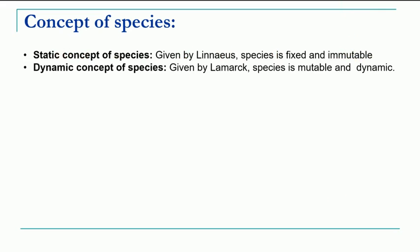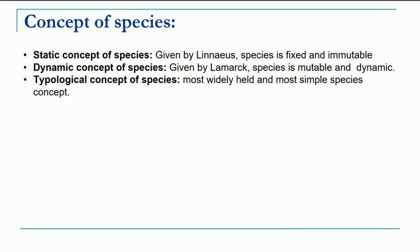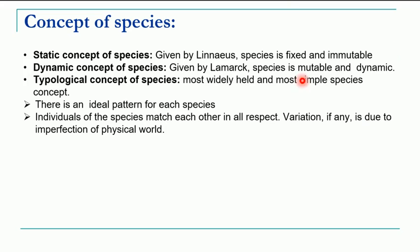The next concept was proposed by Lamarck, known as the dynamic concept of species. According to this concept, species is mutable and dynamic — it continuously undergoes changes. Then the third concept, the typological concept of species, was proposed. This is the most accepted and simplest concept. According to it, there is an ideal pattern for each species; individuals of the species match each other in all respects, and any variation shown is due to imperfection of the physical world — that is, due to the physical conditions of that particular organism.